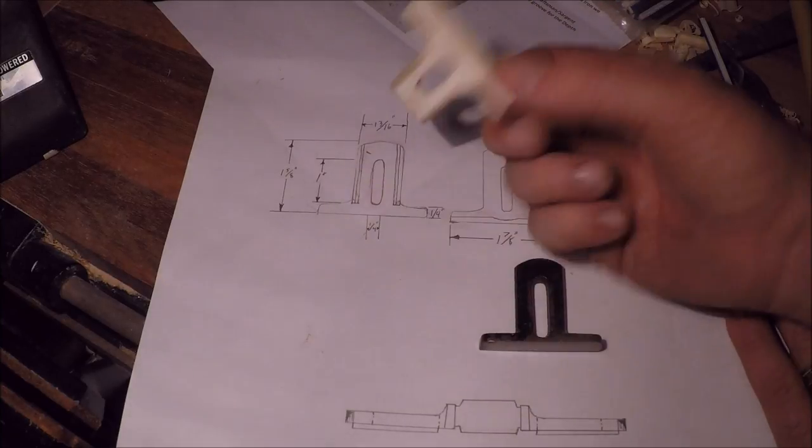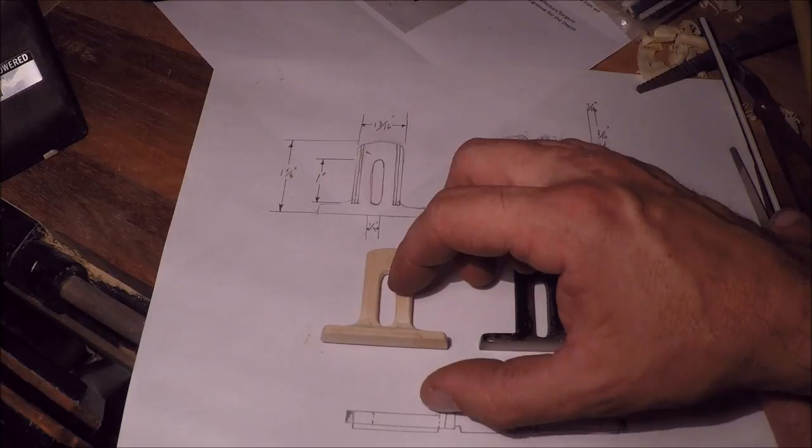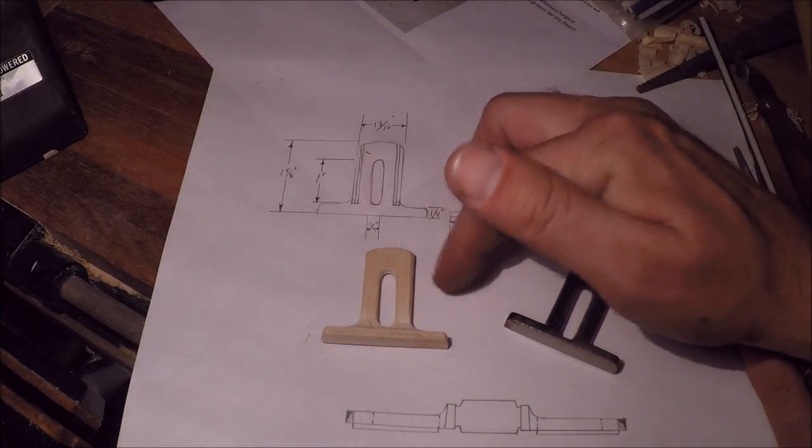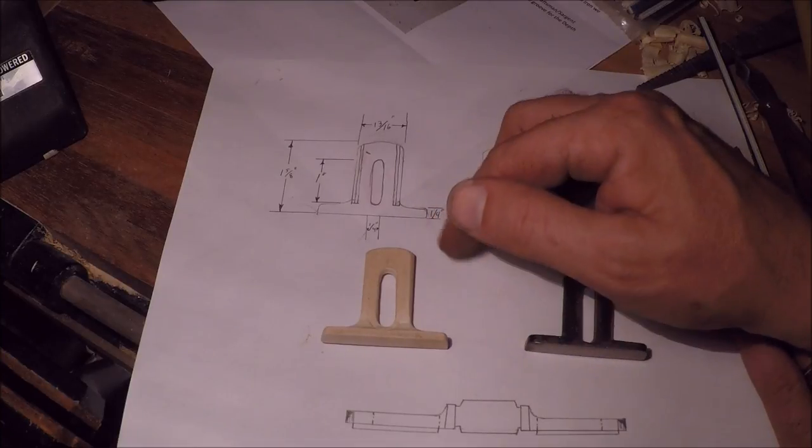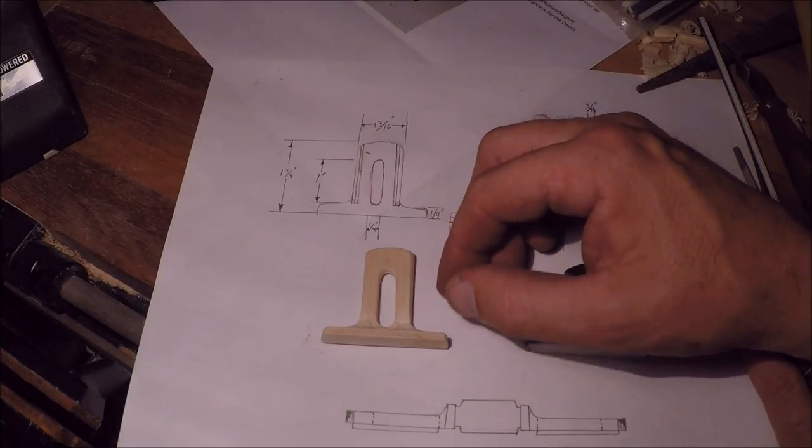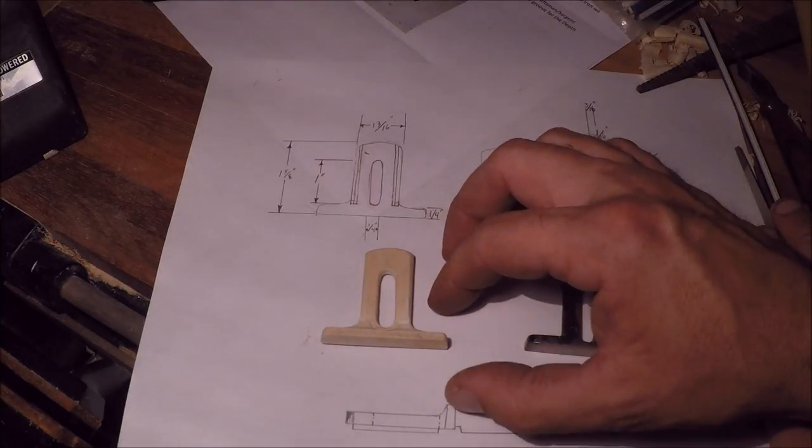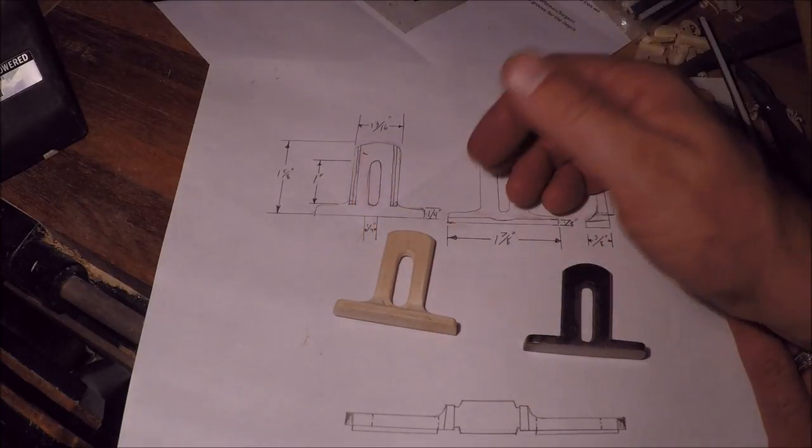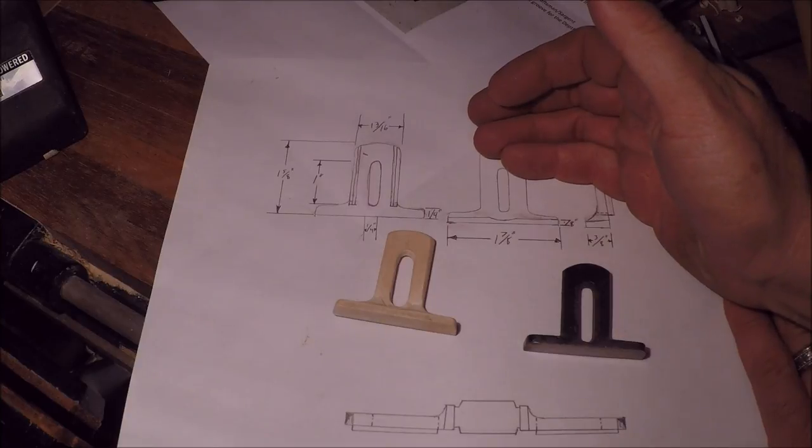That would be called doing a production pattern - this would be the master, and then all those other ones I would make would be production patterns. If the production patterns get damaged - and certainly they're gonna, that's just the nature of the beast - they don't last forever. But I would always have this master pattern that I could make more production patterns, and pretty much we could go on forever making this part.